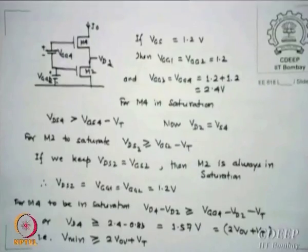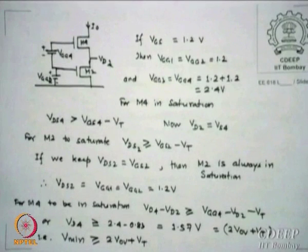What value would I prefer? Vmin should ideally be independent of VOV — only VT-dependent. I would like a current source that depends only on VT and nothing else. If I use a cascode, I have larger VD4 requirements to keep M2 and M4 in saturation. In some cases you may have sufficient voltage margin, but in others this is not acceptable. You would prefer a Vmin of around 0.7–0.8 V.